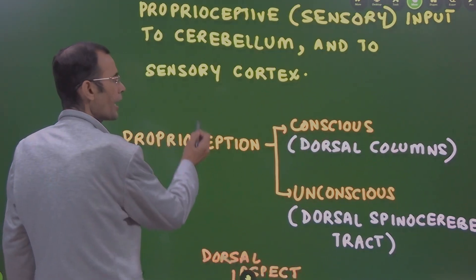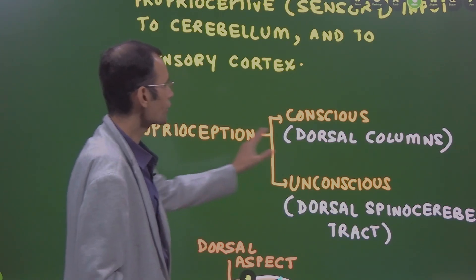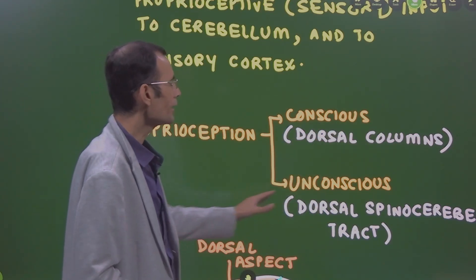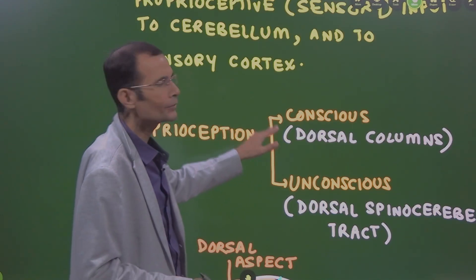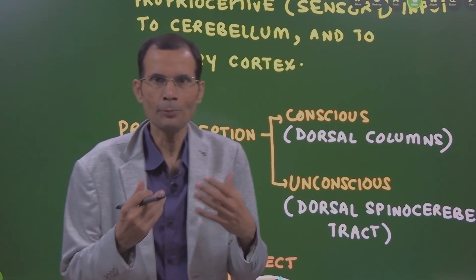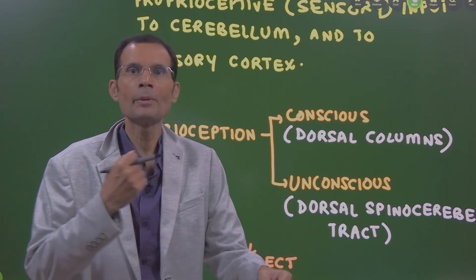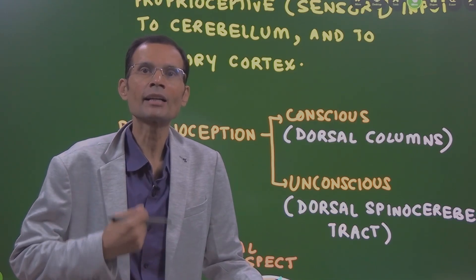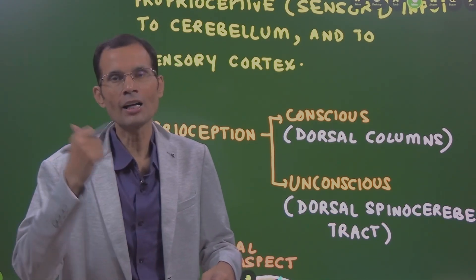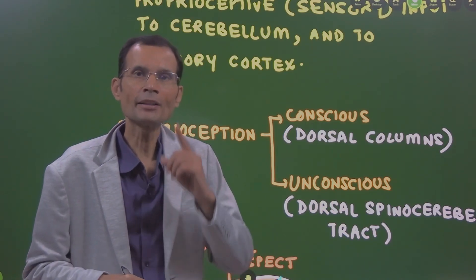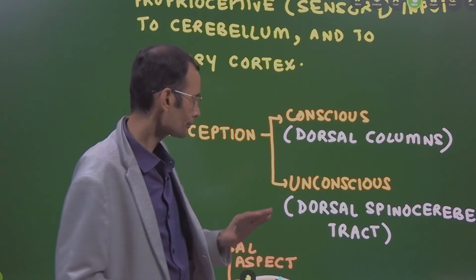So just to add, proprioception is of two types, conscious proprioception and unconscious or subconscious proprioception. The joint position sense which is the proprioception and it is a sensory input starting from the muscles coming to spinal cord and then it ascends upward. It goes to the cerebellum which is the unconscious proprioception and it goes to the sensory cortex which is the conscious proprioception.